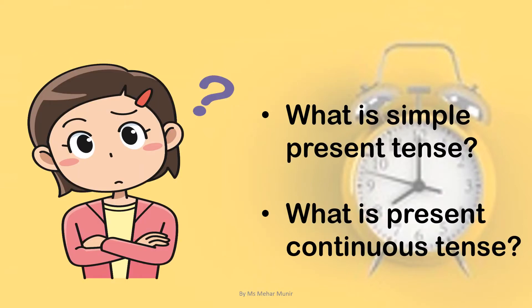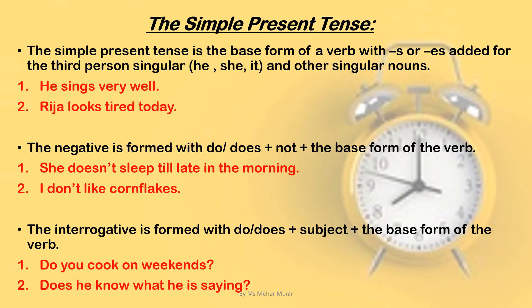The simple present tense is the base form of a verb with s or es added for the third person singular — he, she, it, and other singular nouns. When the subject is singular, we add s or es to the base form of the verb. For example: He sings very well. He is the third person singular, so we added s to the base form 'sing'.